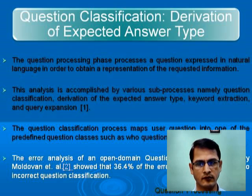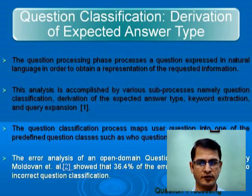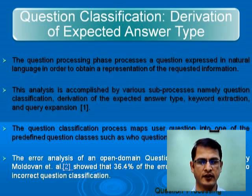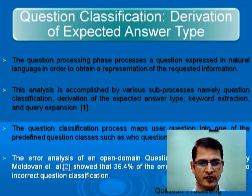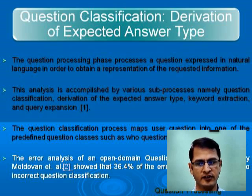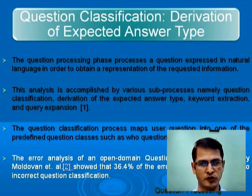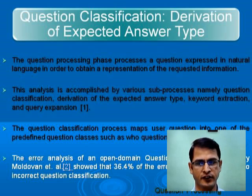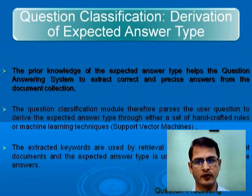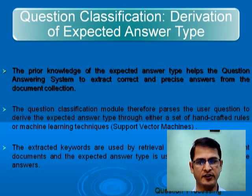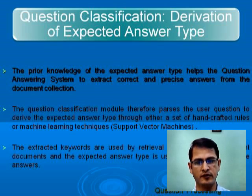Now, coming to the question processing phase. The first important sub-phase is question classification. Research done by Muldwan et al. shows that 36.4% of errors in question answering systems happened due to incorrect question classification. So, question classification is a very important phase. It helps us determine what type of answers are expected from the question. To do that, we need the help of natural language techniques such as support vector machines.